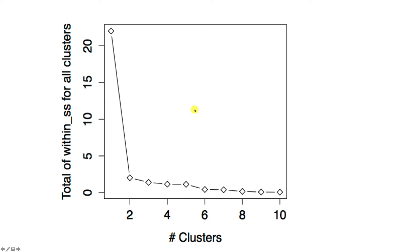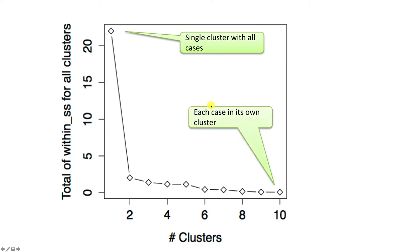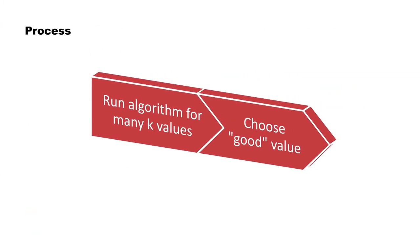Just to be sure we understand the graph properly: the leftmost point represents a single cluster with all the cases — that is the total SS for the data as one single cluster. The other extreme, at 12, would represent having each case in its own cluster, where within SS for every cluster is zero and therefore total SS is zero. The process is: run the algorithm for many K values and choose a good value based on your criteria.